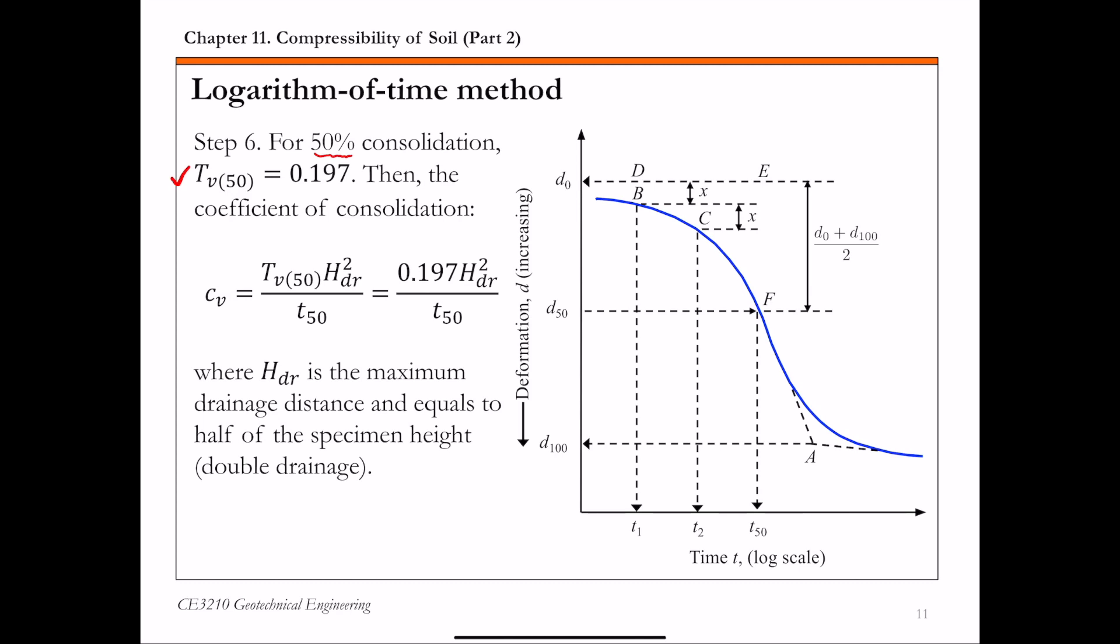Then using the definition of time factor, we can back calculate coefficient of consolidation. In this equation, t sub v is 0.197, and t50 is something we read from the curve that we obtain from step five.